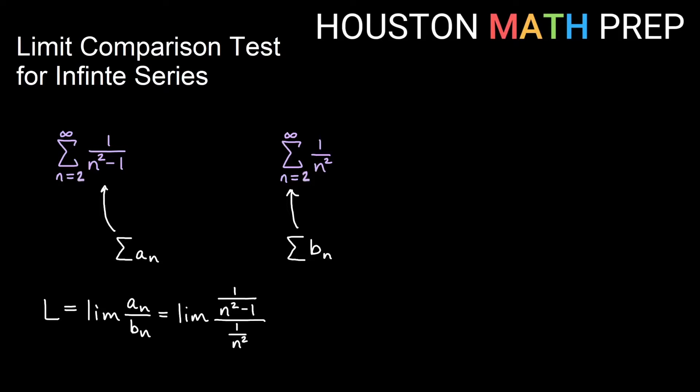This comparison didn't work with direct comparison, but you'll see that it works out with the limit comparison test. The limit comparison test says we look at the limit of the terms of what we're trying to decide over the terms of what we're comparing it to. So we write the limit of one over n squared minus one over one over n squared. Since we have a fraction divided by a fraction, we multiply by the reciprocal, putting n squared on top. Simplifying gives us the limit of n squared over n squared minus one. These are the same degree — comparing coefficients or using two iterations of L'Hôpital's rule gives us that the limit is one.